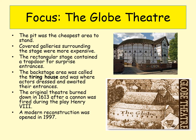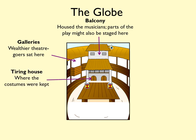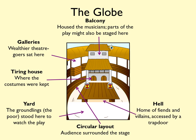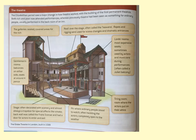Let's look at a diagram of the Globe Theatre. It shows you that people were in the round. The balcony area housed the musicians; the galleries were where the wealthier people would sit. The tiring house was where costumes and any equipment needed for the play were kept. The yard is where the groundlings stood — the poorer people who watched the plays. The circular layout goes back to the fact that plays in medieval and early Tudor times were performed in courtyards. You've also got 'hell' underneath the stage, with access via a trapdoor, and the stage itself was only partly roofed, so actors and groundlings got wet if it rained.